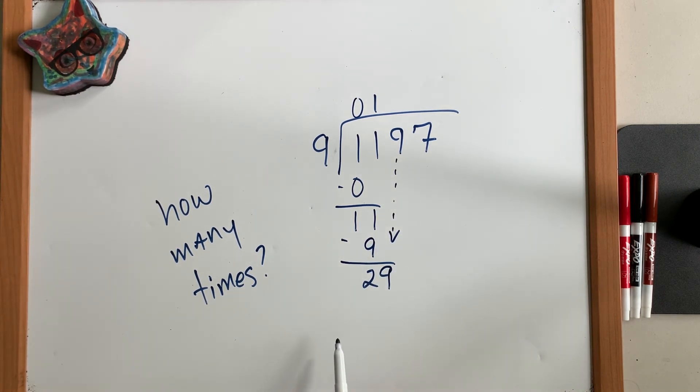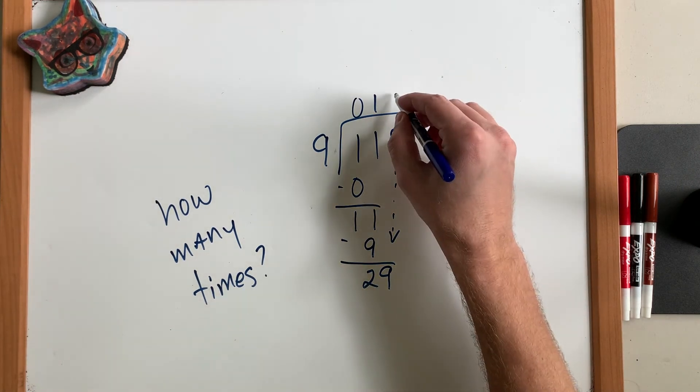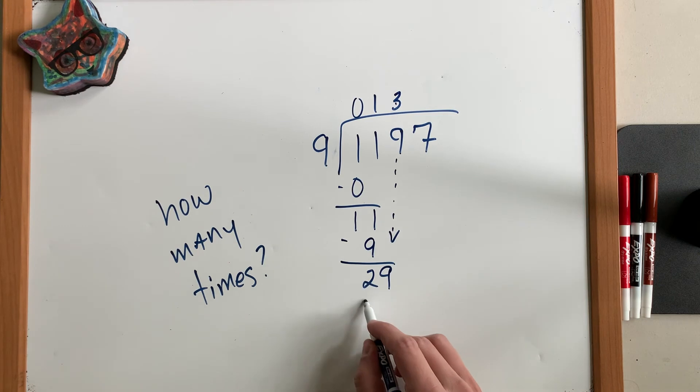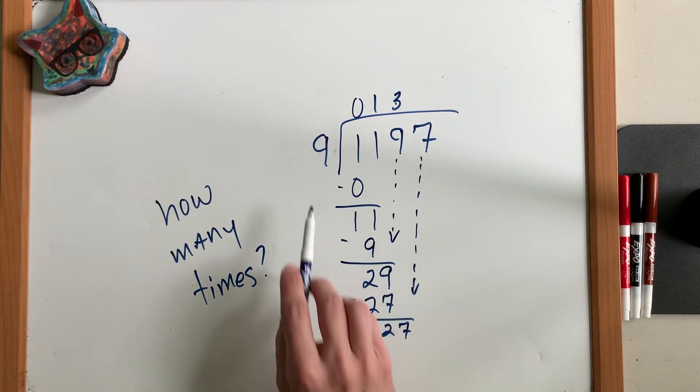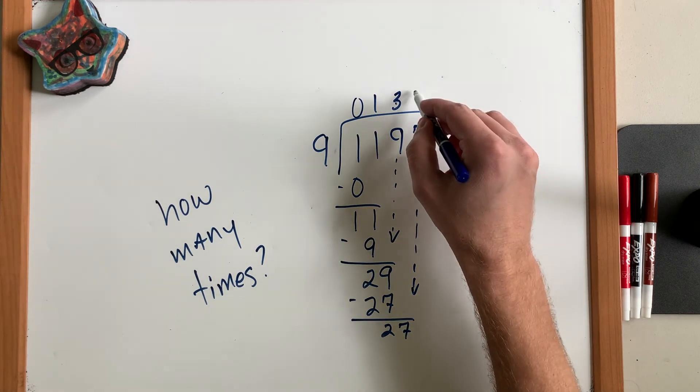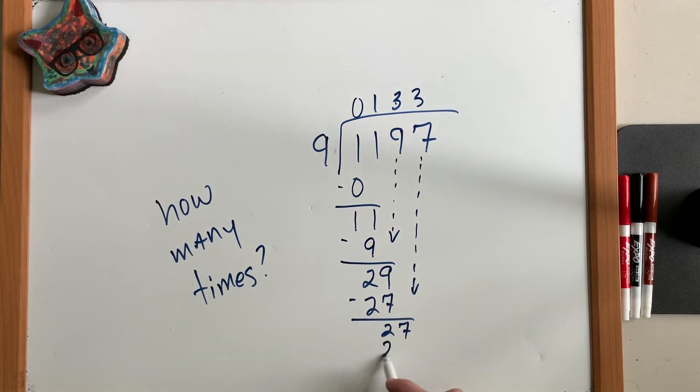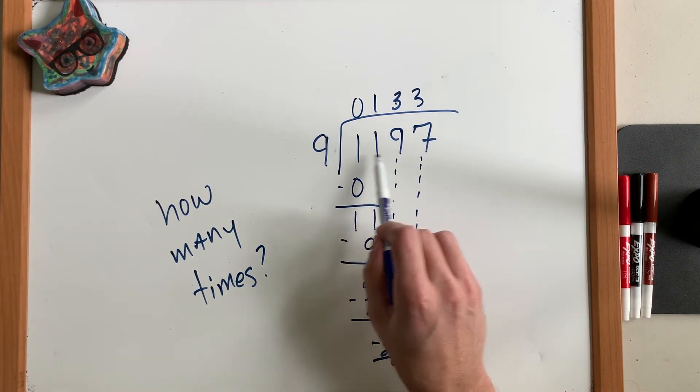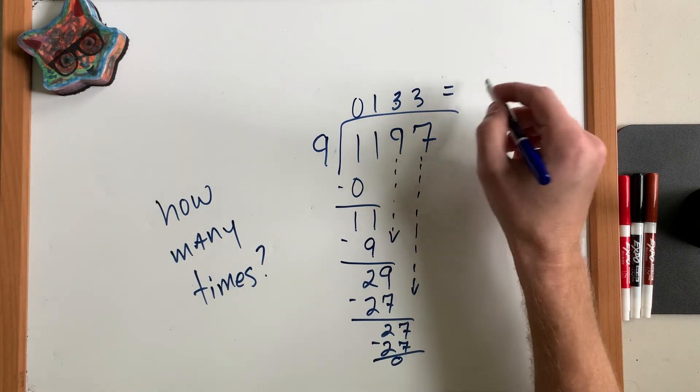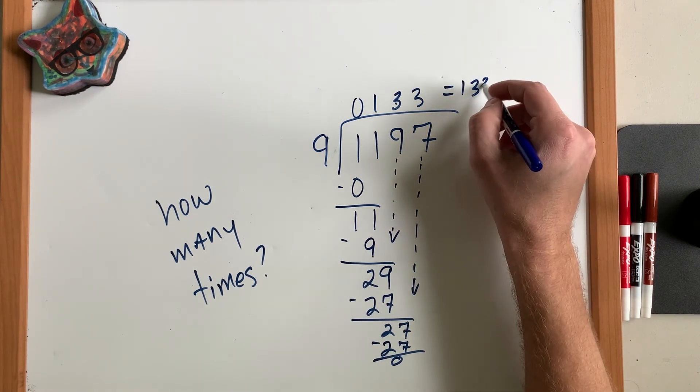We have 29. And 9 can fit into 29 three times. Because 9 times 3 is 27. When I subtract, I get 2 left over. And I bring down the next and last digit. Look at this. We already know that 9 goes into 27 three times. And when we do our subtraction, we are left with nothing. That means that we're done. And the answer to 1,197 divided by 9 is just 133.